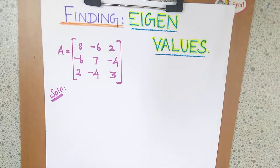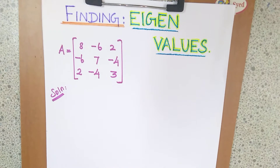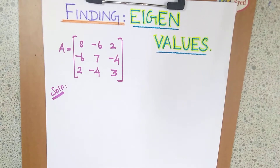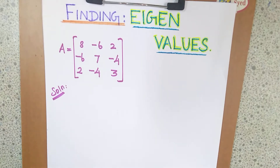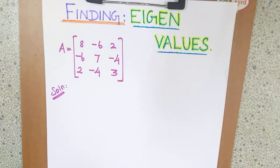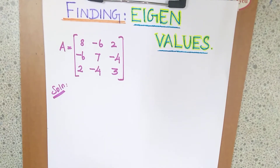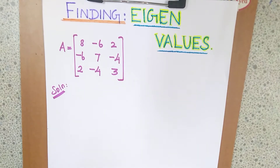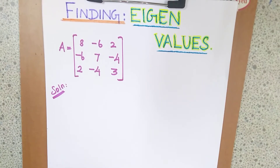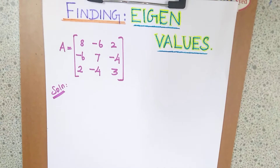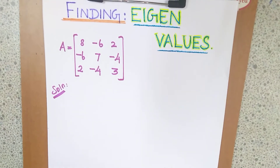In this video we are going to find eigenvalues for a given matrix. For any equation when you are solving it, we can find the solutions which are called roots of that equation. If it is a cubic equation we can get three roots, if it is a quadratic equation we can find two roots. Under matrices, when you find the roots for the characteristic equation, those roots are called eigenvalues.